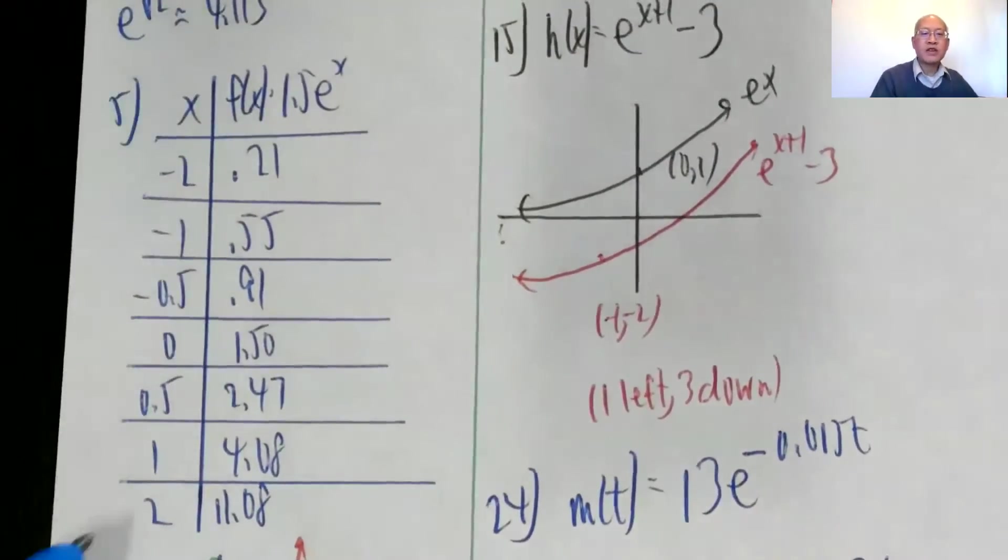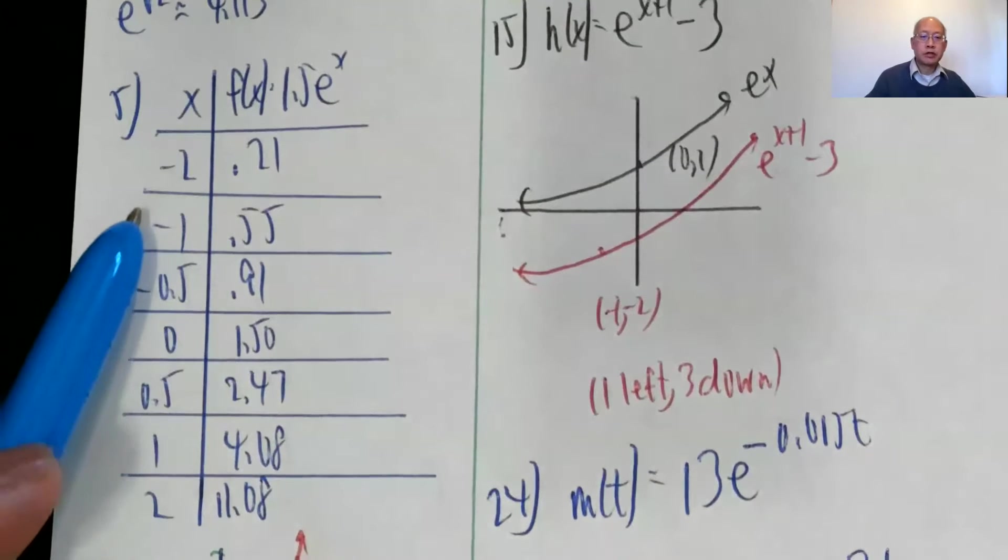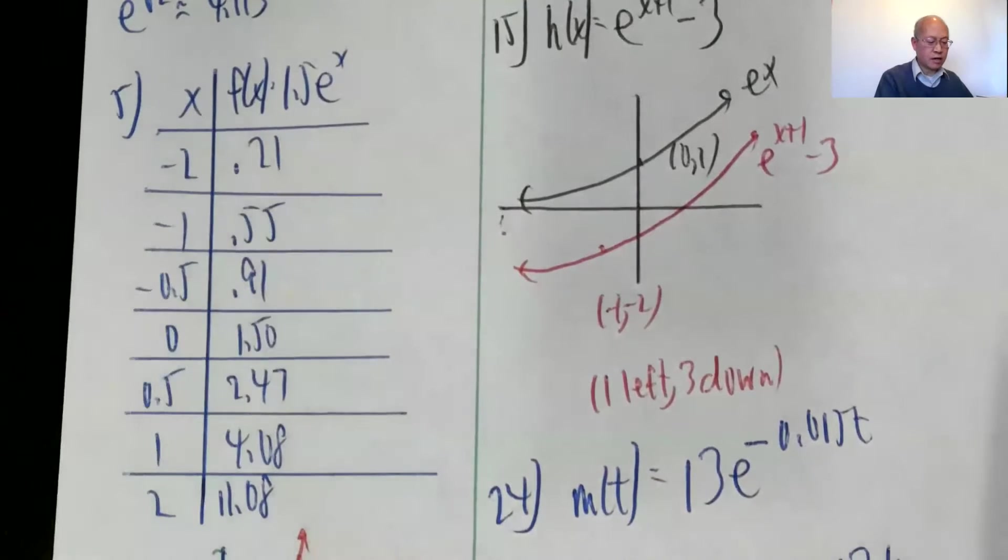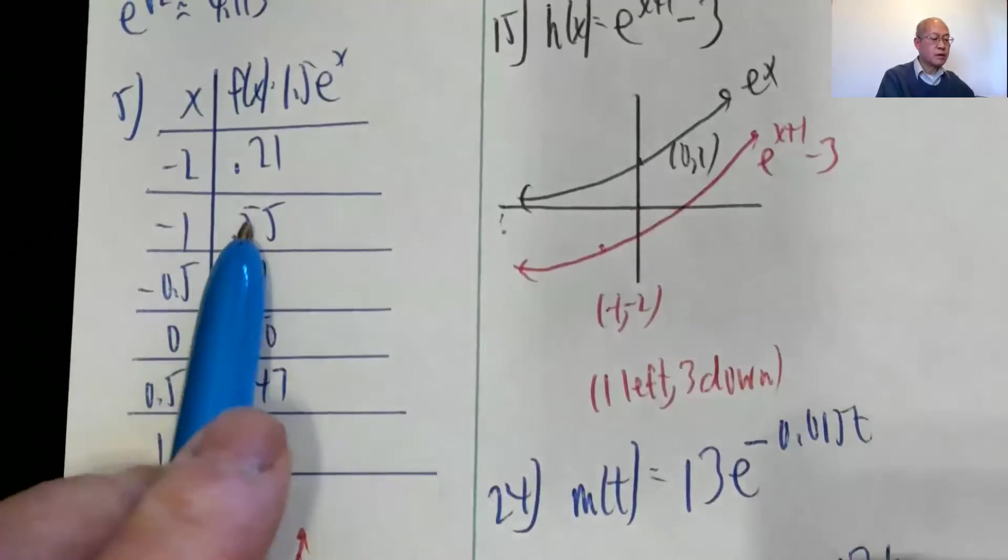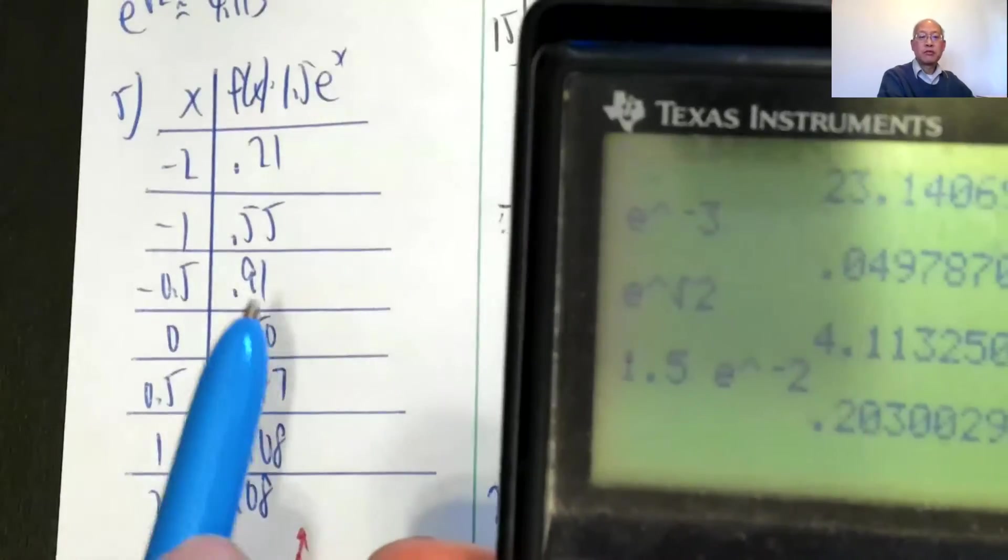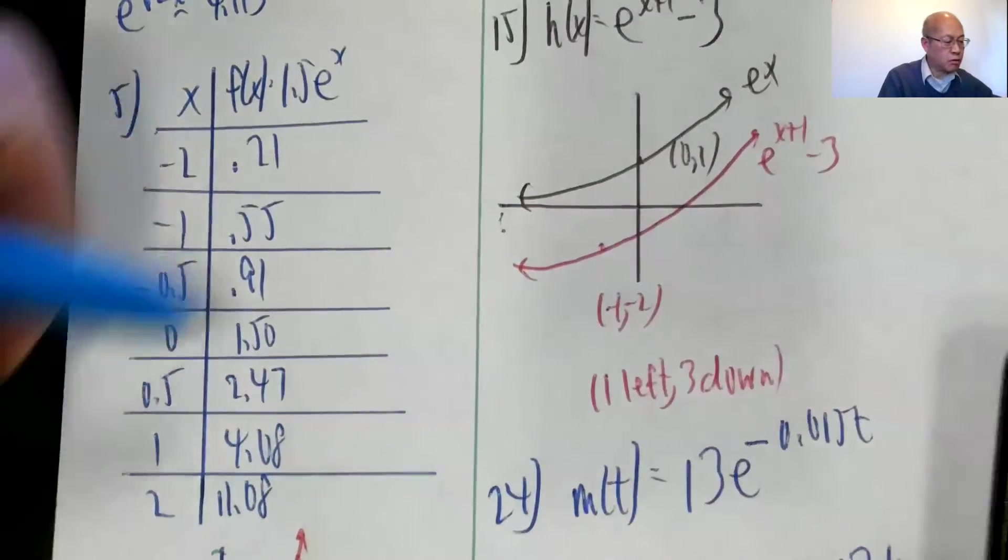Okay, number 5, 1.5 e to the x, so here it is, double check that these work, you go just to a couple of these, negative 2, 1.5 e to the negative 2, 1.5, second function, e to the negative 2, 1.5 e to the 0.203.